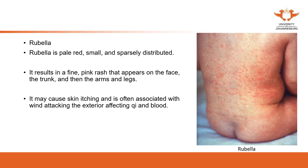Wind attacks the skin, affecting qi and blood. Why wind? Because the rash — whether measles or similar — can develop from one area to another, migrating. Does that ring any bells? Migration is the characteristic of wind. Something moves from one area to another — that is migration, the characteristic of wind. In treatment, we use methods to relieve the wind. If it presents as redness, that indicates heat or fire in the body, so we can use methods to clear the heat.